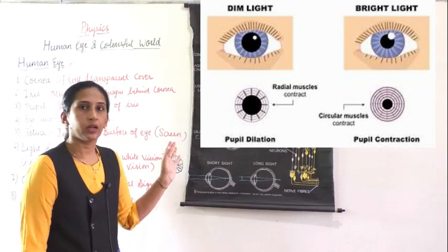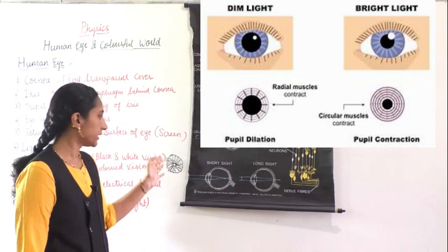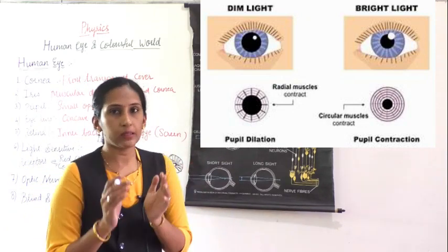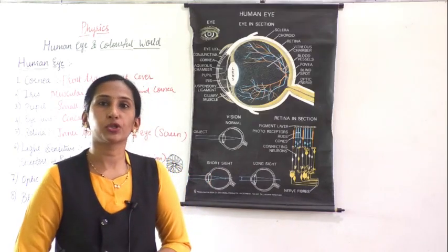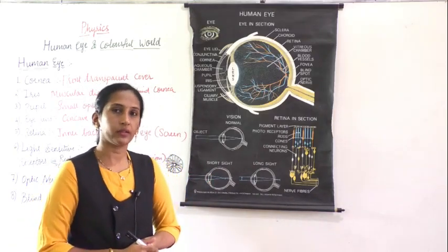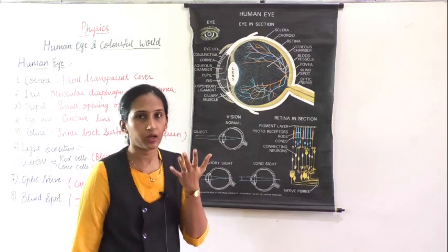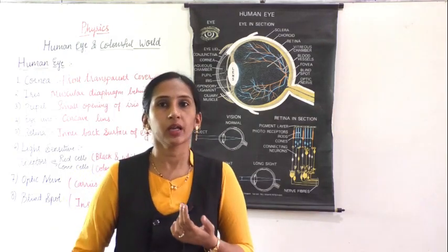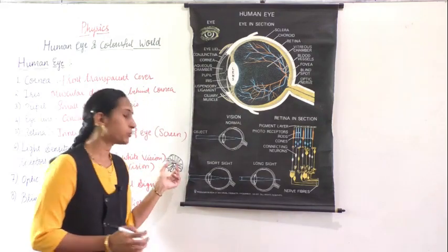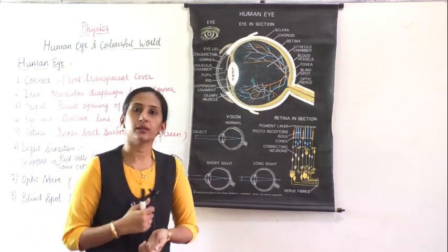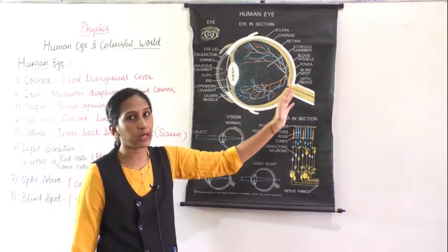The iris muscle helps the pupil to contract or dilate depending on the intensity of light. This is how more or less light is managed as it enters our eyes.